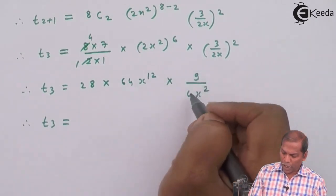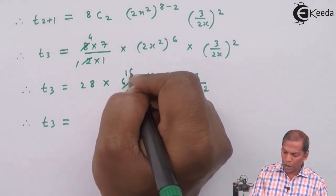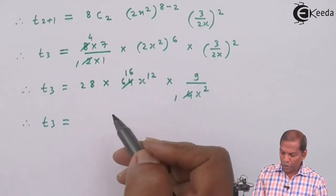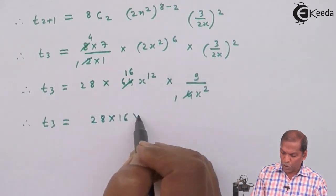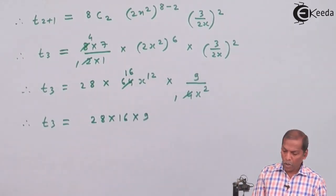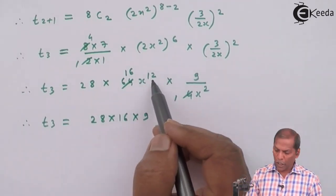Therefore t₃ = now we go for cancellation. 64 becomes 16 after canceling with 4.